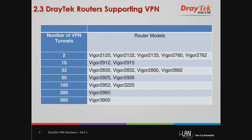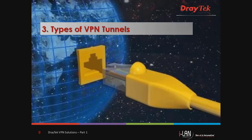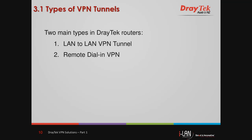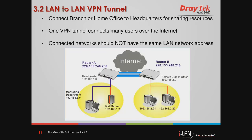VPN tunnels start at two for the low-end routers such as the Vigor 2762 and go up to 500 for the high-end router, the Vigor 3900. Now there are two main types of VPN tunnels available in DrayTek routers. First is a LAN-to-LAN VPN tunnel, and second is a remote dial-in VPN. LAN-to-LAN VPN tunnels are used to connect a branch office or a home office to the head office for sharing resources. Through one VPN tunnel, many users can be connected over the internet. The users at the branch office can access servers and printers, for example, as if they were on their local network.